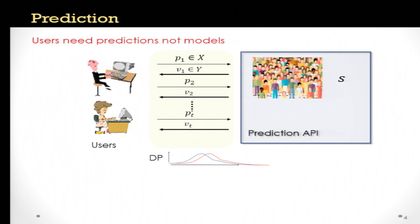It's a pretty natural model, and it's not abstract — it actually corresponds to how many existing systems already work. For example, pretty much any online system will operate in a way where it only handles queries and does not reveal the model that has been learned.